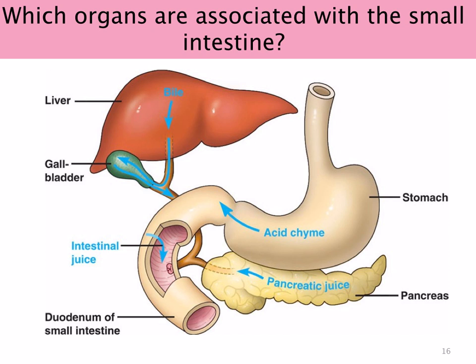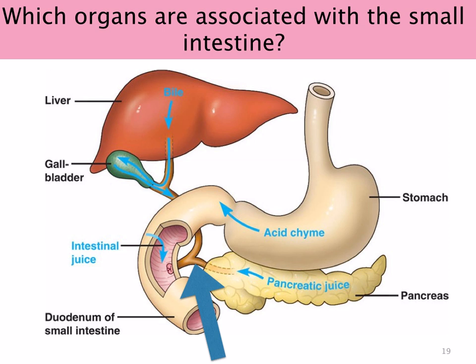Let's have a look at the organs associated with the small intestine. The duodenum is a short piece of intestine just after the stomach, and it's associated with the gallbladder and the pancreas. Remember that the stomach is acidic, so the chyme — which is the watery food with mucus, acids and gastric juices — is going to be acidic. When it passes from the stomach into the small intestines, the pancreas produces pancreatic juice and the gallbladder produces bile. Bile is going to emulsify the fats and is released into the duodenum, as is the pancreatic juice.